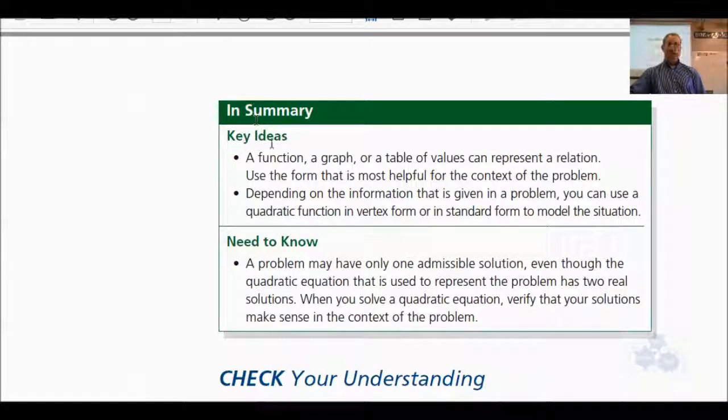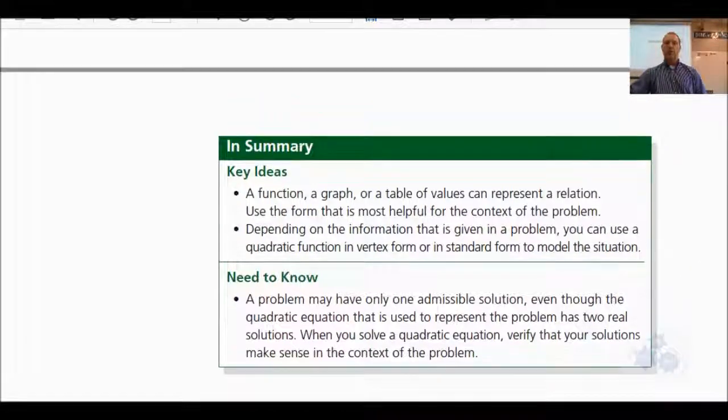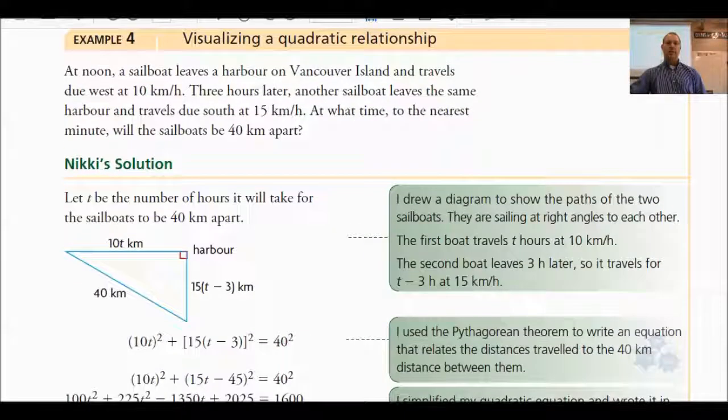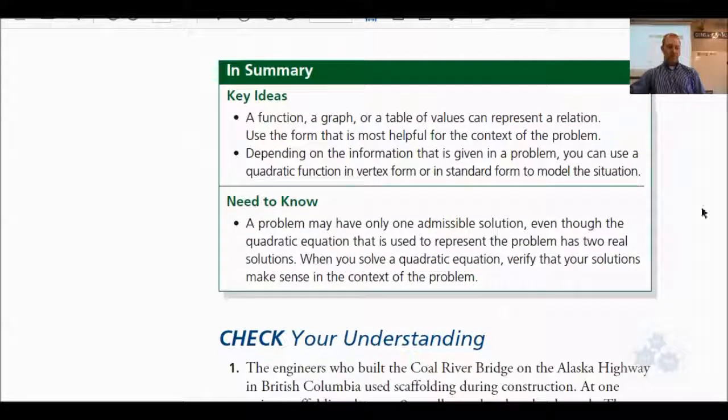So the key ideas for this section: a function, a graph, or a table of values can represent a relation. Use the form that is most helpful for the context of the problem. Depending on the information that's given, you can use a quadratic function in vertex form or in standard form to model the situation. We created an equation given the information, then we used graphing technology to find the intersection points. The other thing you could do is use the quadratic formula to find the roots. I'll get you to look over the other examples as needed when you do your assignment for 7.8. Assignment is 7.8: 1, 2, 4, and 8.